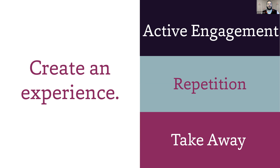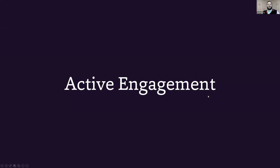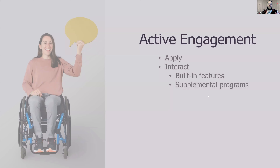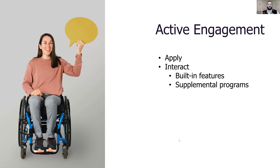We'll break this into three parts: active engagement, repetition, and takeaway. As we get into active engagement, you want to think of this as an application and an applied experience portion of your content for your learners. You want to pair this with a framing stage where you'll introduce some content and see what base knowledge your learners have, then pair it into this application piece so that they can dive deeper and really start to engage actively with the content.